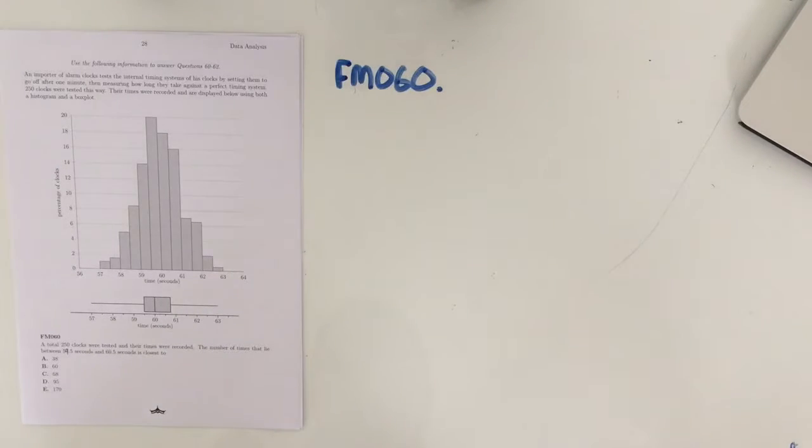An importer of alarm clocks tests the internal timing systems of his clocks by setting them to go off after one minute, then measuring how long they take against a perfect timing system. 250 clocks were tested this way. Their times were recorded and are displayed below using both a histogram and a box plot.